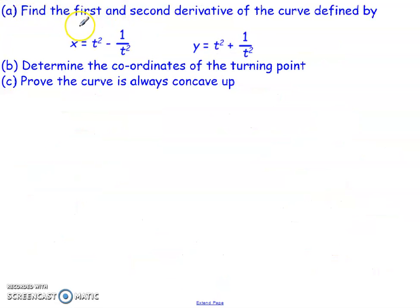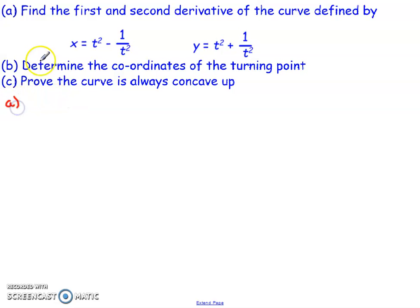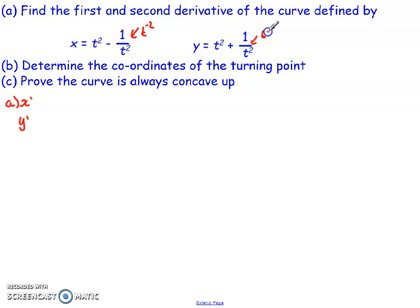Second question: find the first and second derivatives of the curve defined by these parametric equations, determine the coordinates of the turning point, and prove it's always concave up. For part a, same as we did before — calculate x-dashed and y-dashed. For these ones, take the 1 over t squared term as t to the negative 2 in both equations.